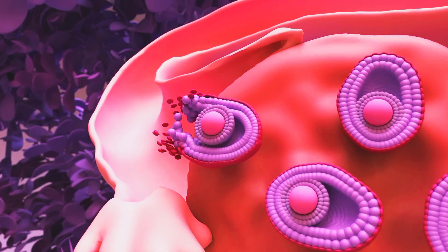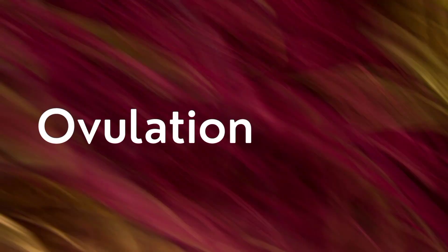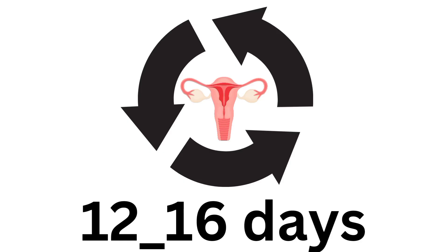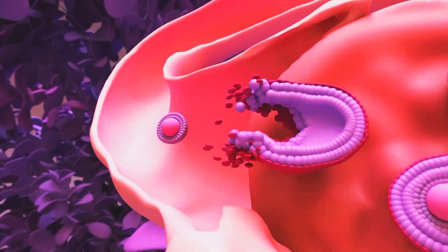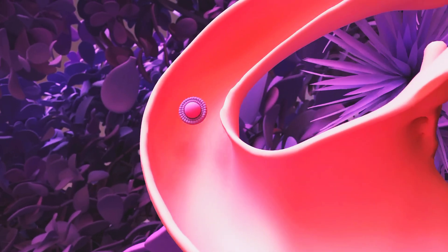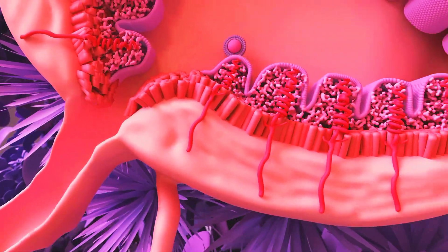The second phase is ovulation. Around the middle of the cycle, usually between days 12 and 16, an egg is released from the ovary. This occurs due to a surge in luteinizing hormone (LH), triggered by the hypothalamus and pituitary gland.